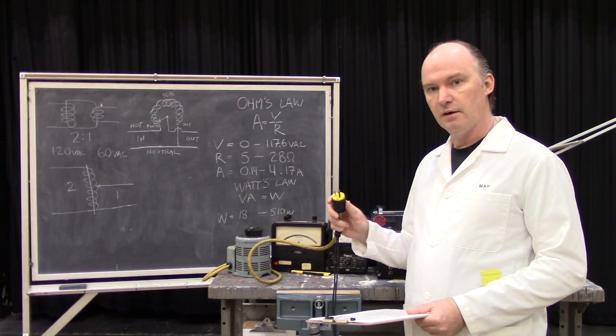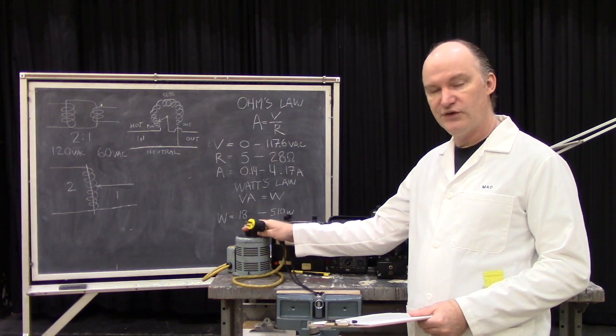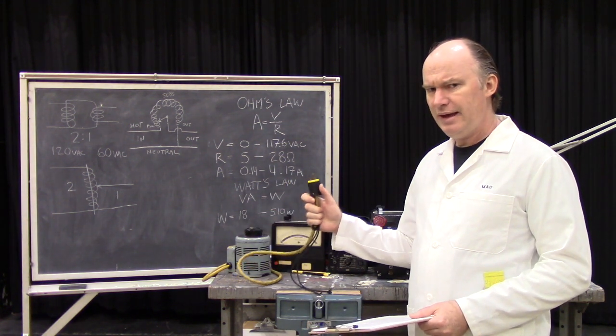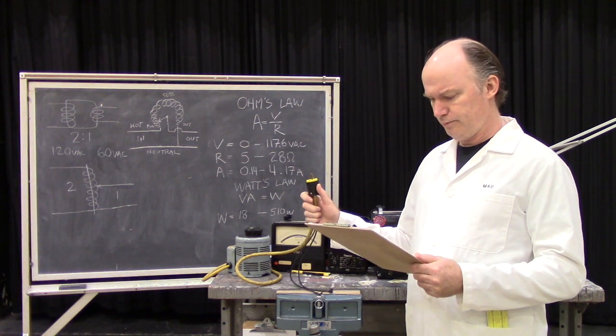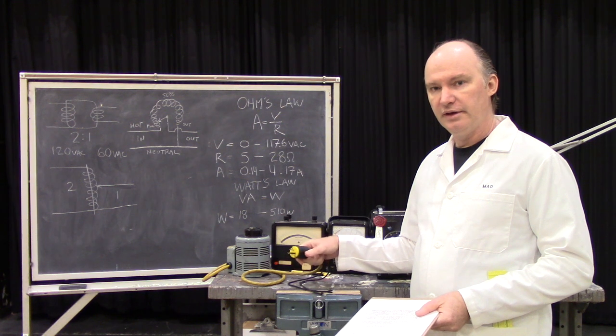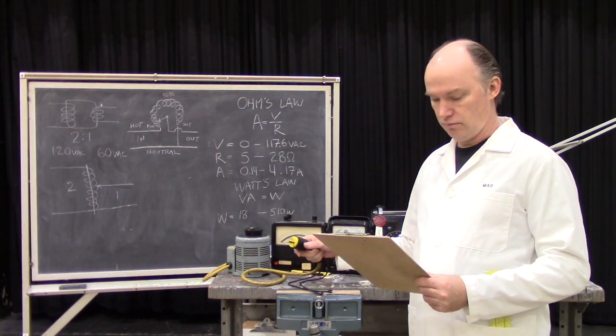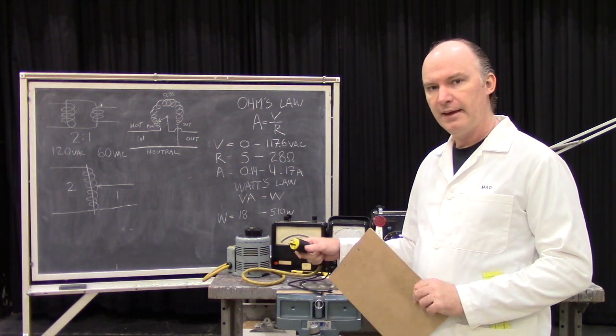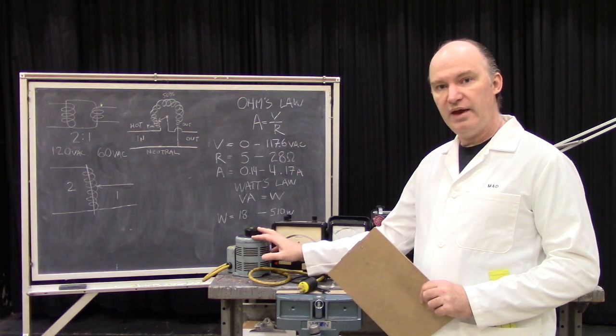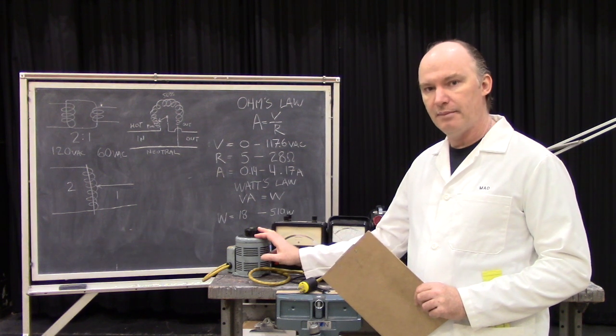If you took a multimeter and measured the resistance of this autotransformer when it is set to zero, you would only get 0.9 ohms. The electricity in this building is about 119.9 volts last time I measured it, which if we take Ohm's law, tells us that when we plug this in it should draw 133 amps.